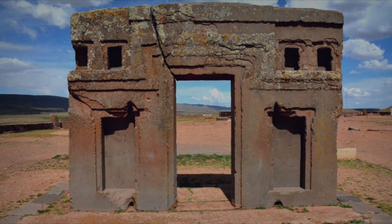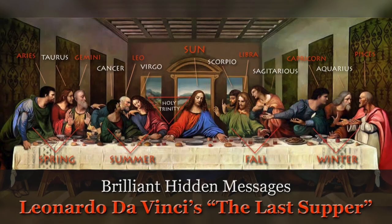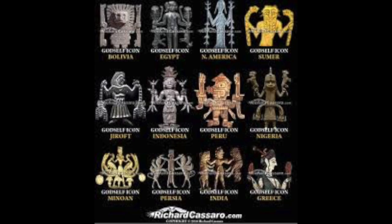If we look here, this is called the Gate of the Sun in Bolivia. And if we look at Leonardo da Vinci's The Last Supper — this is obviously with esoteric understandings showing the sun and the 12 disciples, like the sun is a disk as the zodiac signs — in the background we see the triptych. And here we have the Godself icons from ancient cultures, all showing the triptych.